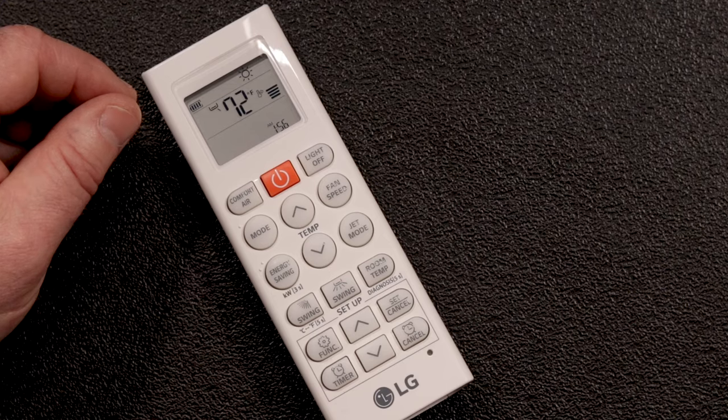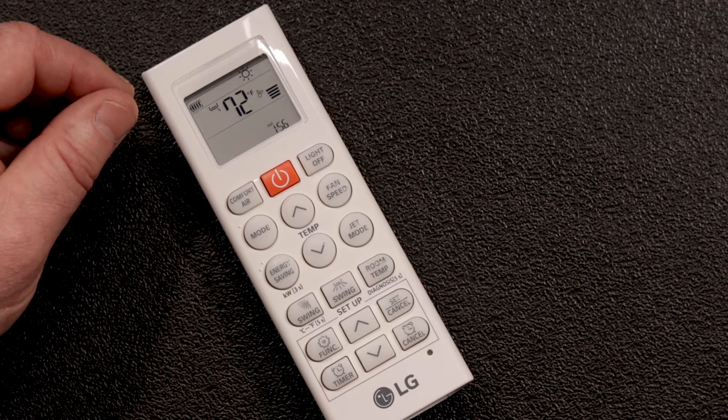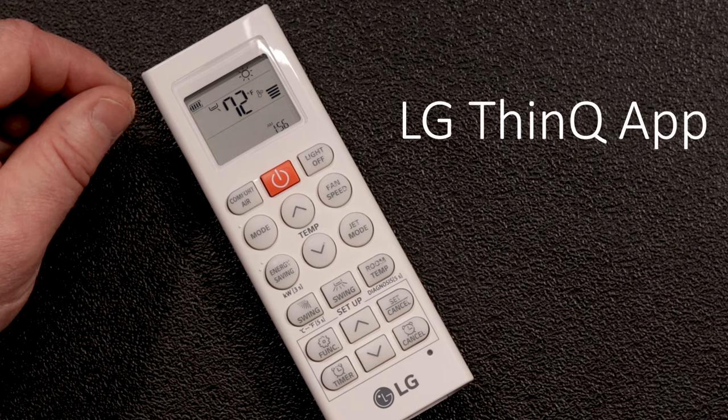Your LG ductless system comes with a built-in Wi-Fi adapter that allows it to connect to your mobile device. To enable Wi-Fi connections, download the Think app from the Apple or Android store and follow the instructions.